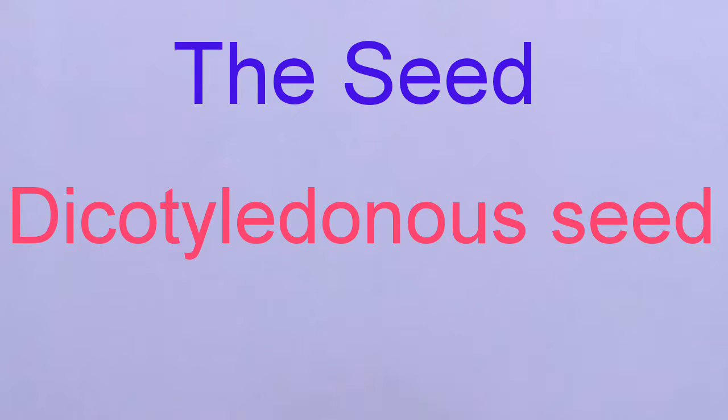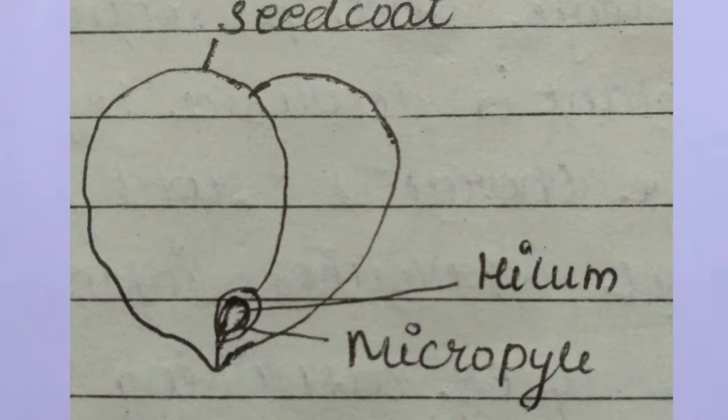The hilum is a scar on the seed coat through which the developing seeds were attached to the fruit. Above the hilum is a small pore, i.e. micropyle.